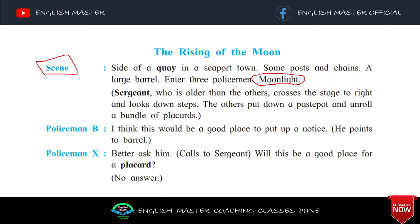Kya kya rakha hua hai? Some posts and chains — bade bade khambay hain, uske baad chains hain. Aur ek bada barrel hai voha par — paani ka jo barrel rehta hai. Moonlight ka samay hai. Enter three policemen — teen police wale voha par enter karte hain. Sergeant, who is older than the others, crosses the stage to right and looks down steps. Sergeant ka meaning kya hai — yeh jo police officer ka role play kar raha hai, he is also a police officer.